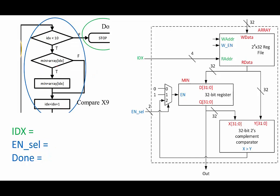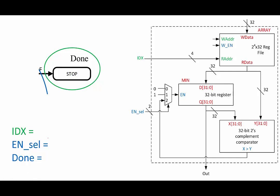In the first compare state, we want index to be one, and we will store the contents of array index one into minimum only if minimum is greater than the contents of array index one. We are still not done. For each successive iteration of the compare state, we will simply increment the value of the index. In the done state, we should stop writing to the minimum register so that we don't overwrite our final solution. Because of that, we also really don't care what index is, so let's just set it to zero to be safe. And then we finally get to set the done flag to one because we're done.